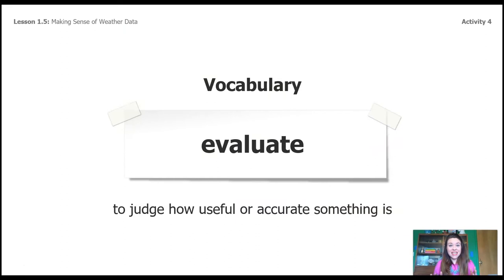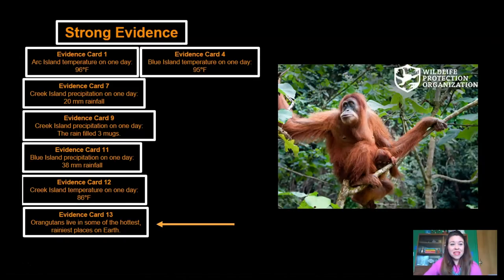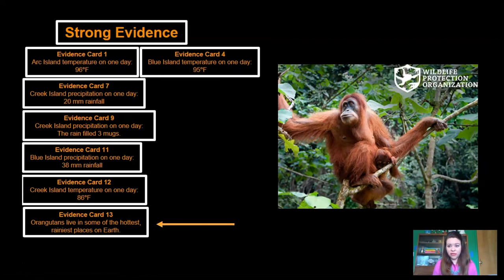What you just did is a really cool skill called evaluating. You just evaluated a bunch of evidence. Evaluate means to judge how useful or accurate something is. We looked at all those pieces of evidence and decided how useful they were to us. The strong evidence is going to be useful; the weak evidence is not. So we just evaluated!